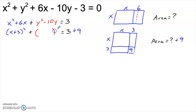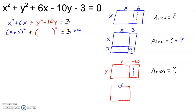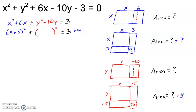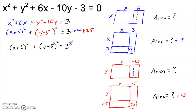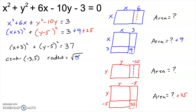For the y terms, I want to replace y squared minus 10y with something squared. I draw the picture: a y by y square and a -10y rectangle. Splitting it in half and bringing one half to the bottom gives almost a (y - 5) by (y - 5) square. Filling in the corner adds 25, so y squared minus 10y becomes (y - 5) squared, adding 25 to the right side. The equation is now in center-radius form: the center is (-3, 5) and the radius is the square root of 37.